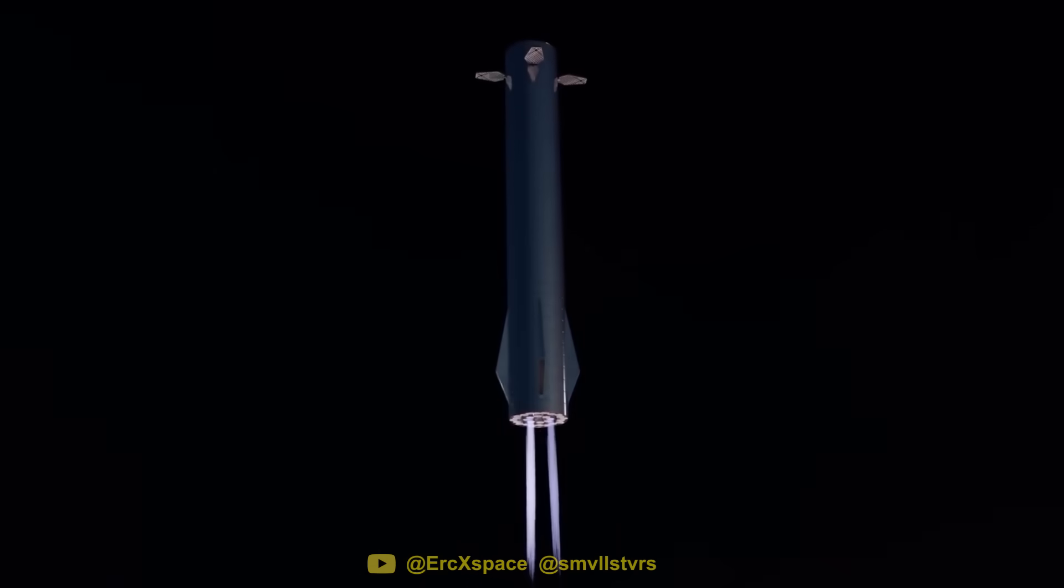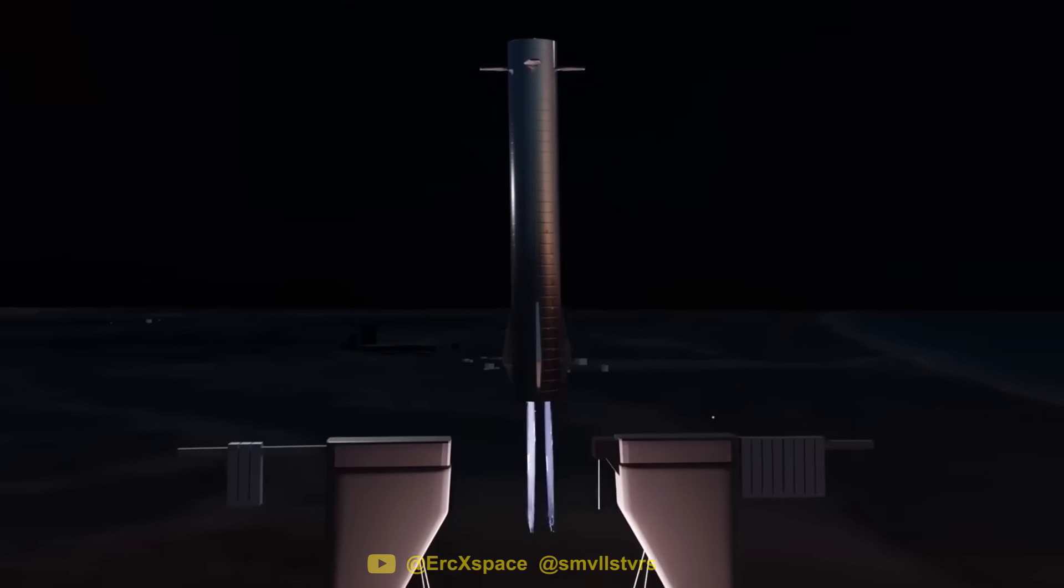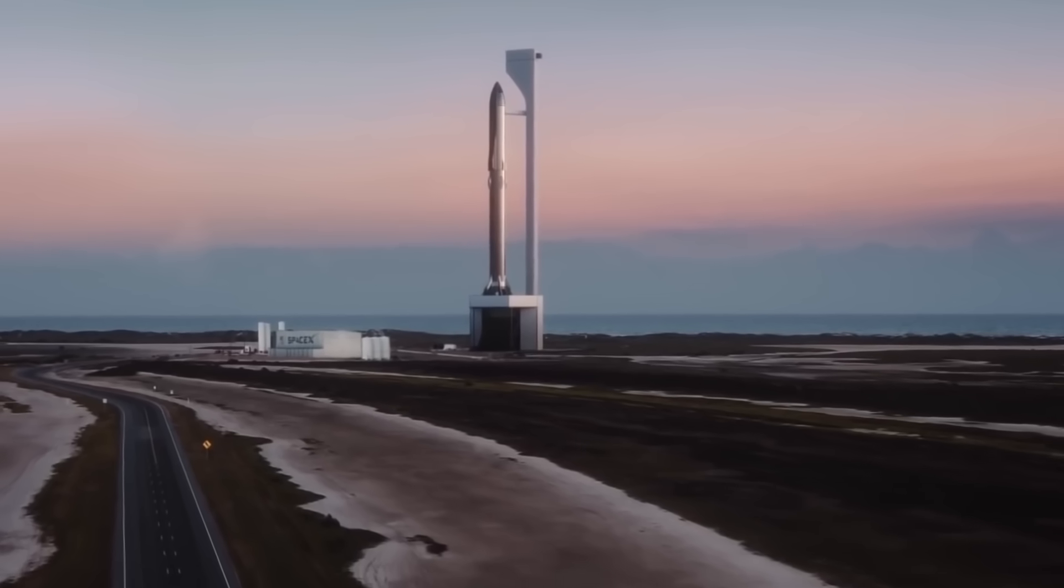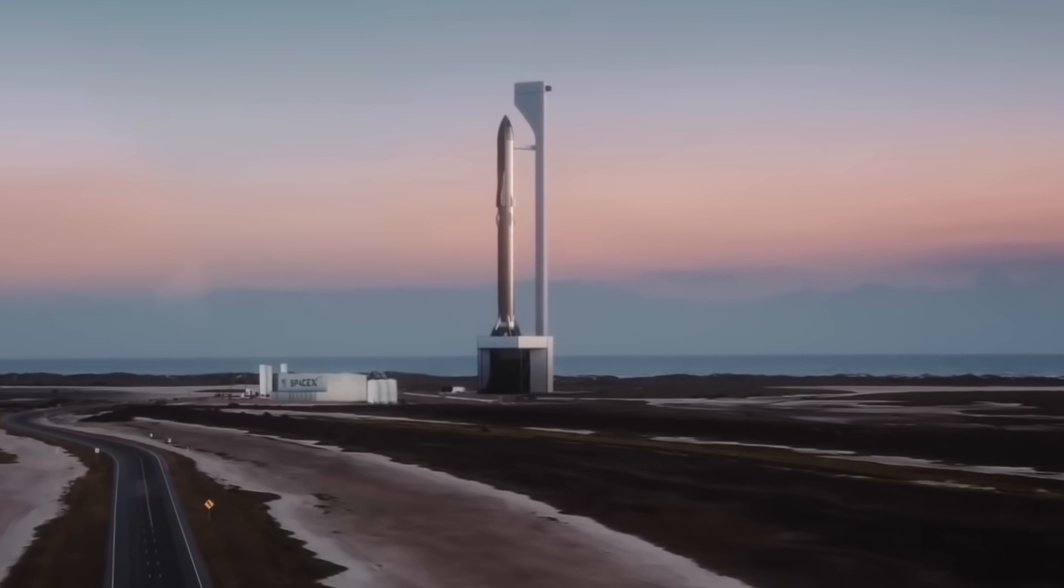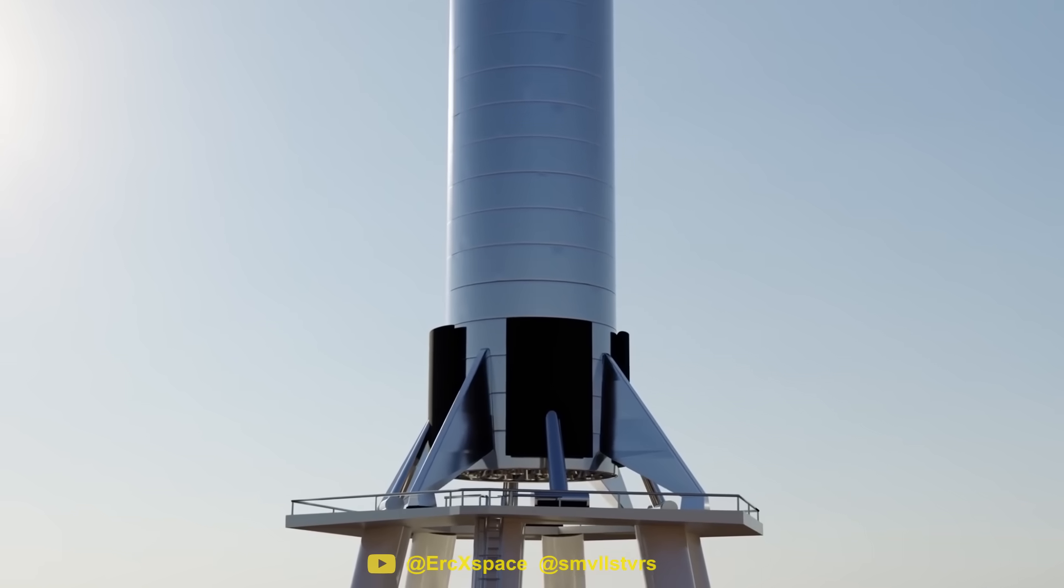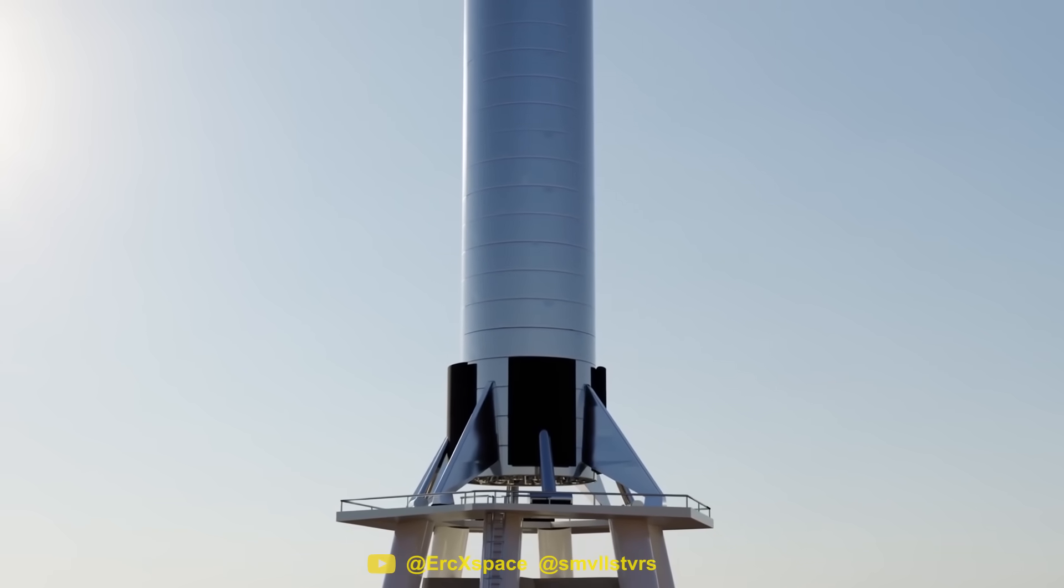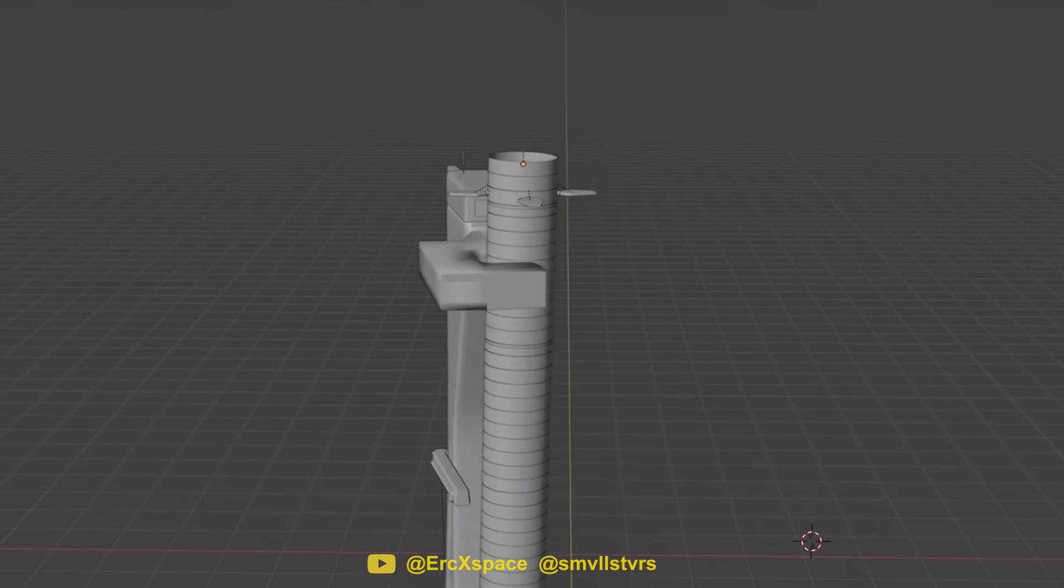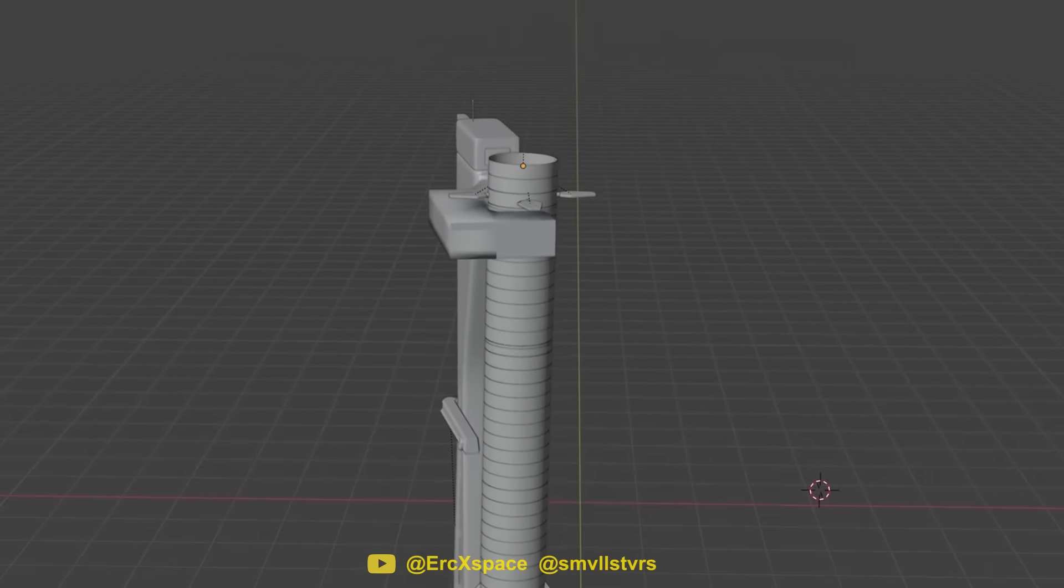Removing the legs from the design completely would not only simplify the turnaround time, but it would also save an incredible amount of weight. Every kilogram of mass saved will allow the rocket to carry heavier payloads into orbit. With 6 legs on the Super Heavy, the overall mass of the landing gear would be around 10% of the entire booster upon landing. But without any legs, SpaceX's only option is to catch the booster.